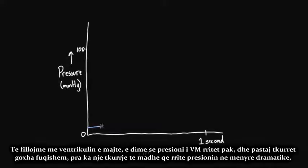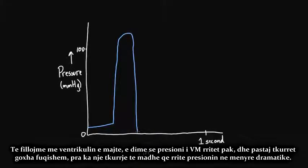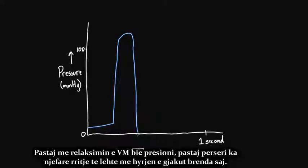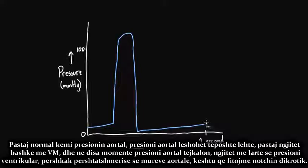We know that the left ventricular pressure kind of rises steadily, and then it contracts really hard — it has this huge contraction which increases the pressure dramatically. Then it kind of bottoms out as the left ventricle relaxes, and then slowly picks up again in pressure as more blood fills in. And of course, then you have your aortic pressure as well.